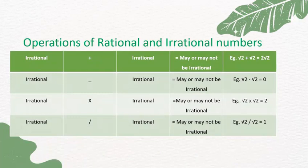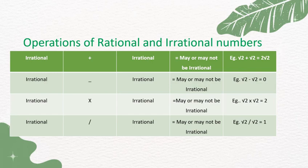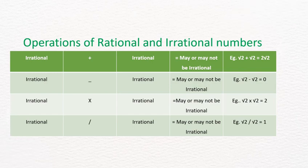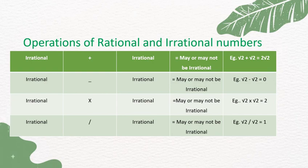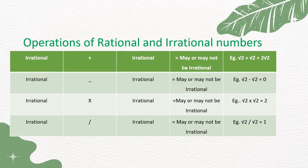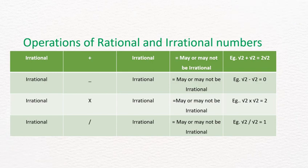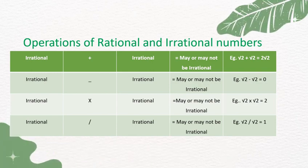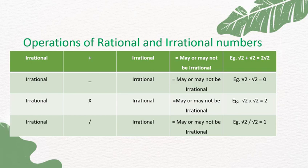Operations of irrational numbers: irrational plus irrational may or may not be irrational. For example, √2 + √2 = 2√2 (irrational), but √2 − √2 = 0 (rational). Similarly, irrational minus irrational, irrational multiplied by irrational, and irrational divided by irrational may or may not be irrational.